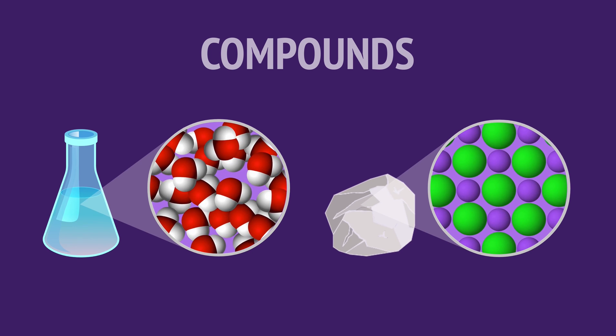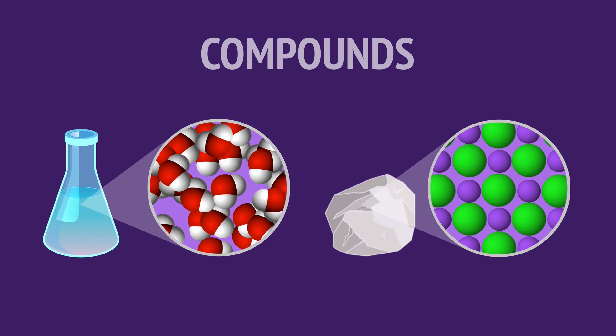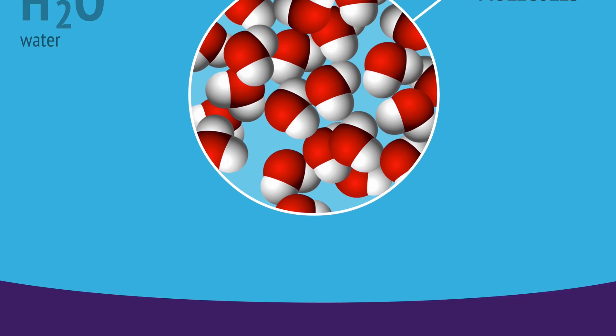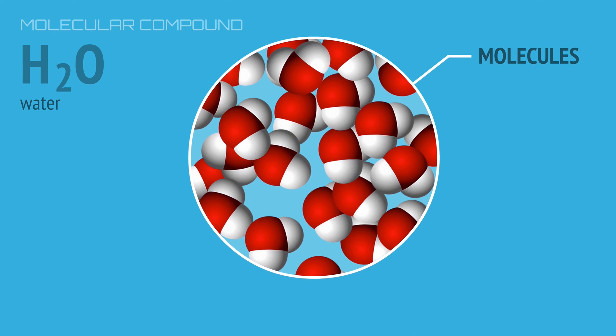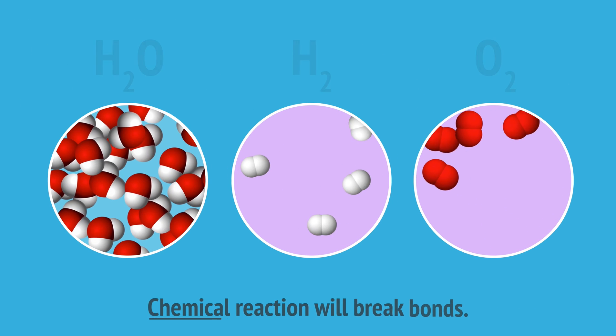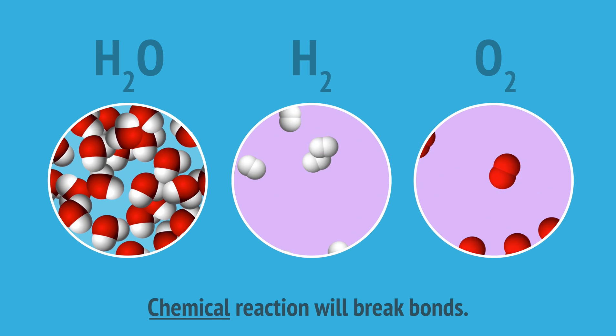The elements in a compound have been chemically combined, so they can't be broken up using a physical process. We can't physically break up water into the elements hydrogen and oxygen. Only a chemical reaction that breaks the molecule's bonds can do that.